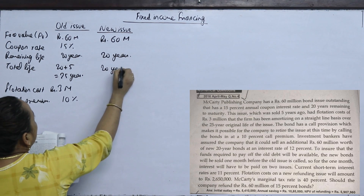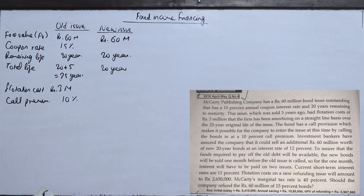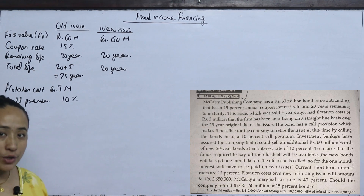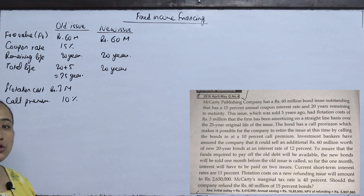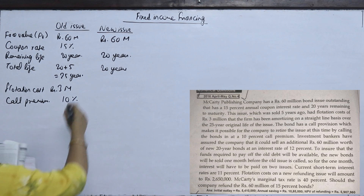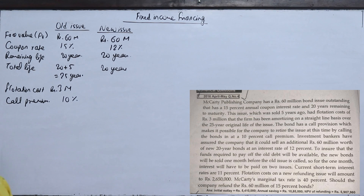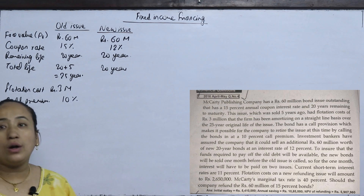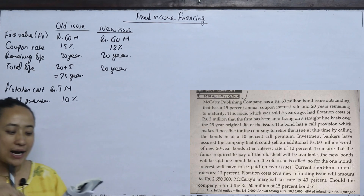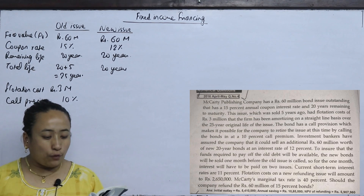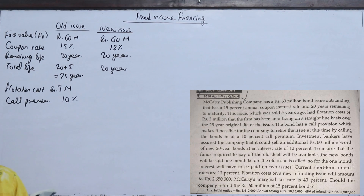The new bond has a remaining life and total life of 20 years, at an interest rate of 12%. The objective is cost minimized — the new interest is 12% versus old interest of 15%. To ensure that the funds required to pay off the old debt will be available, the new bond will be sold one month before the old issue is called. For that one month, interest will have to be paid on two issues.